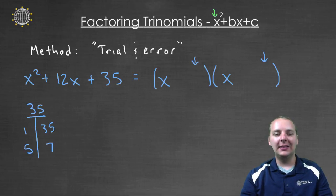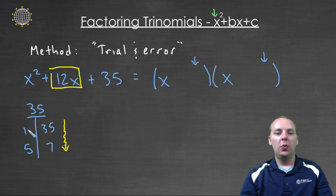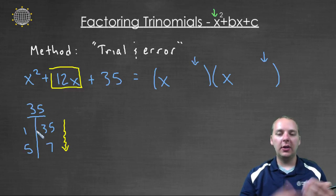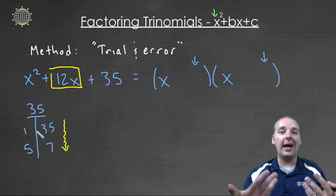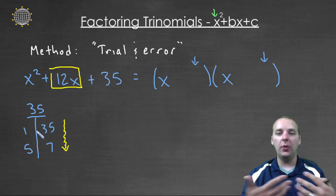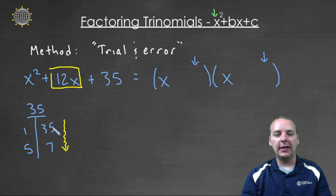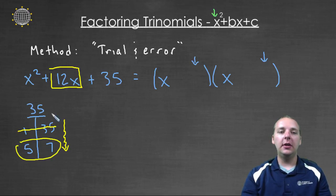So now I'm going to scan this list right here, I'm going to look down this list, and I'm going to see, do any of these pairs, or could any of these pairs add up to twelve? Well one and thirty five, they couldn't be combined, added, or subtracted in any way to give me twelve. So that's not the pair that I want. But then I see five and seven, and I say, hey, five times seven does multiply to thirty five, but it could also add to twelve.